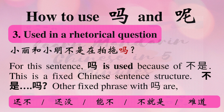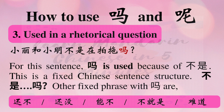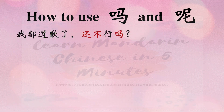For the sentence 小力和小明不是在拍拖吗?, 吗 is used because of 不是. This is a fixed Chinese sentence structure: 不是 + something + 吗. Other fixed phrases used with 吗 are: 还不, 还没, 能不, 不就是, 难道.